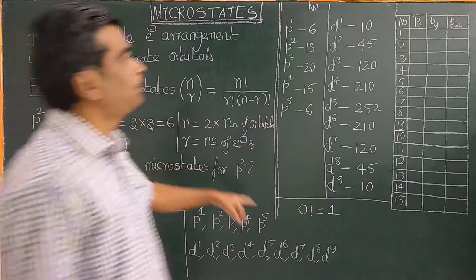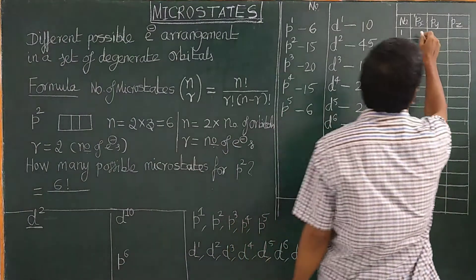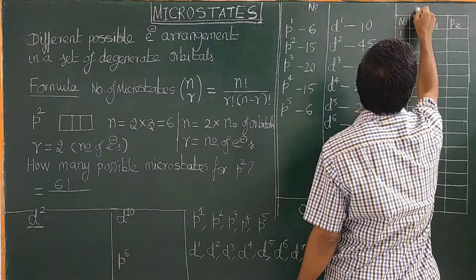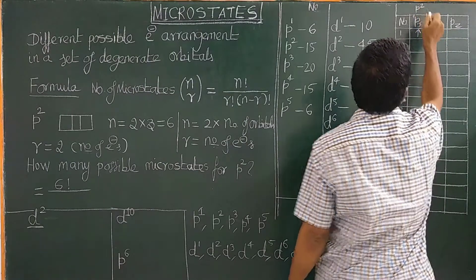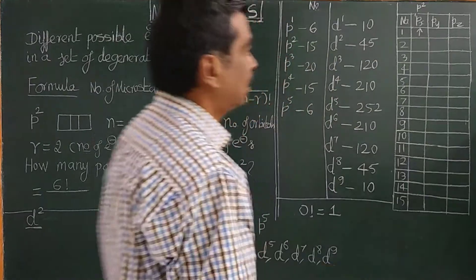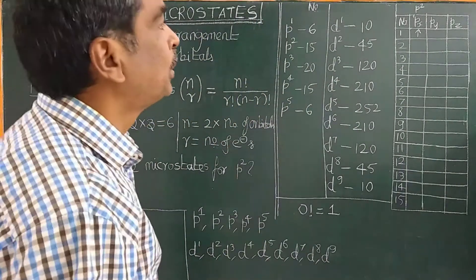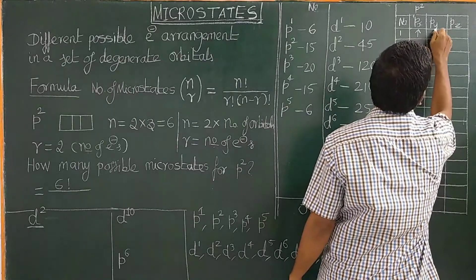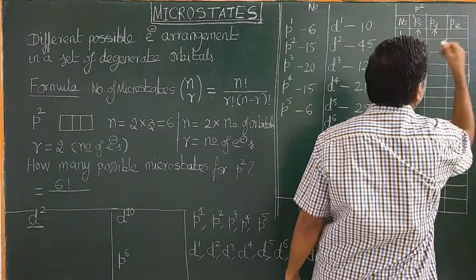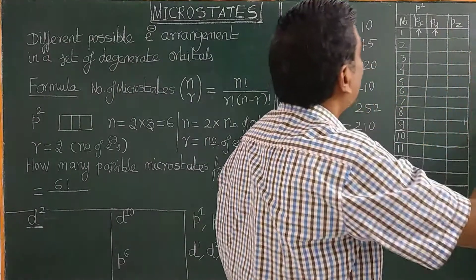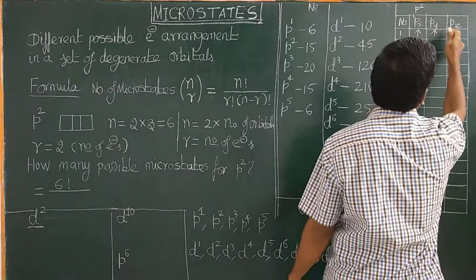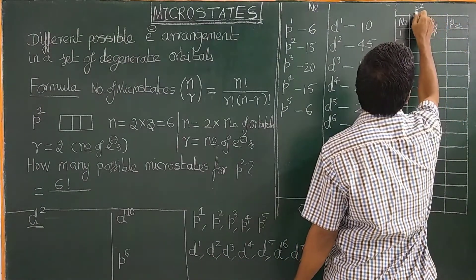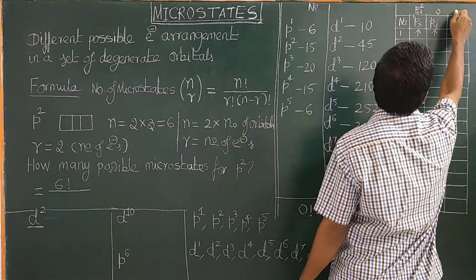Different possible electronic arrangements are possible. For example, for P2 electronic configuration — carbon, atomic number equal to 6, with configuration 1s2 2s2 2p2. I can put one electron spin up in px, and the magnetic quantum numbers are plus 1, 0, minus 1 for the orbitals.